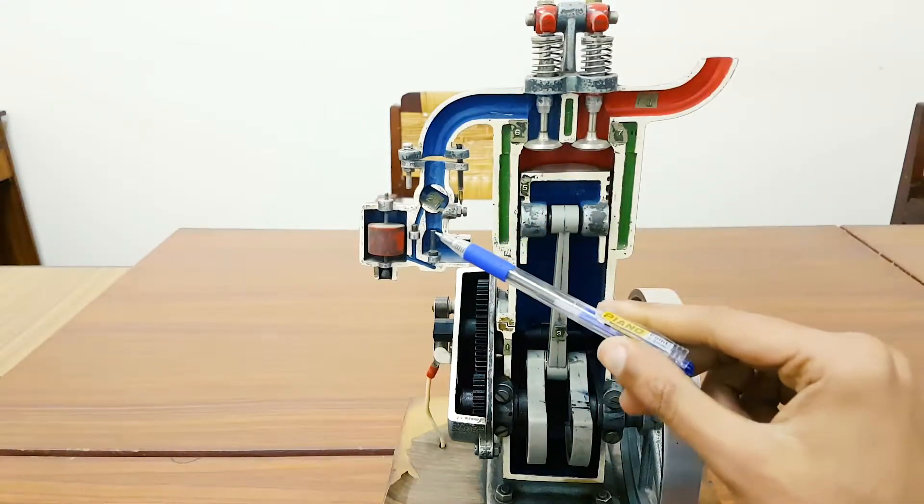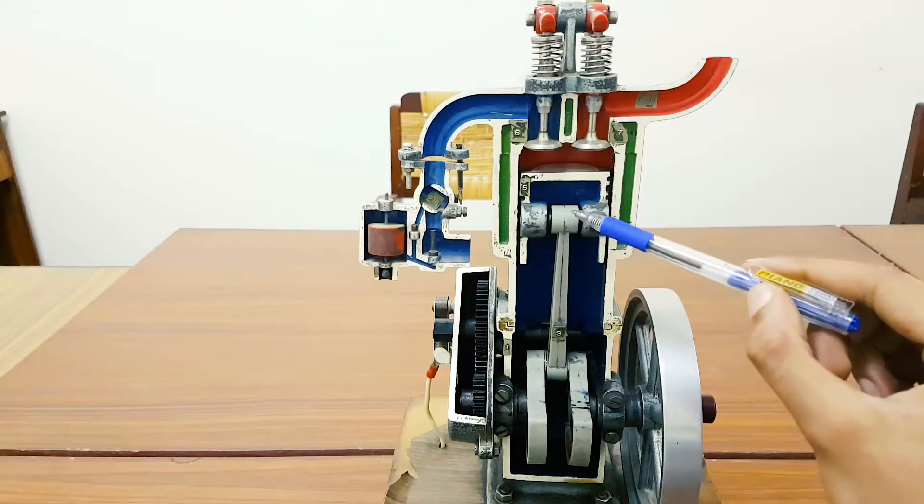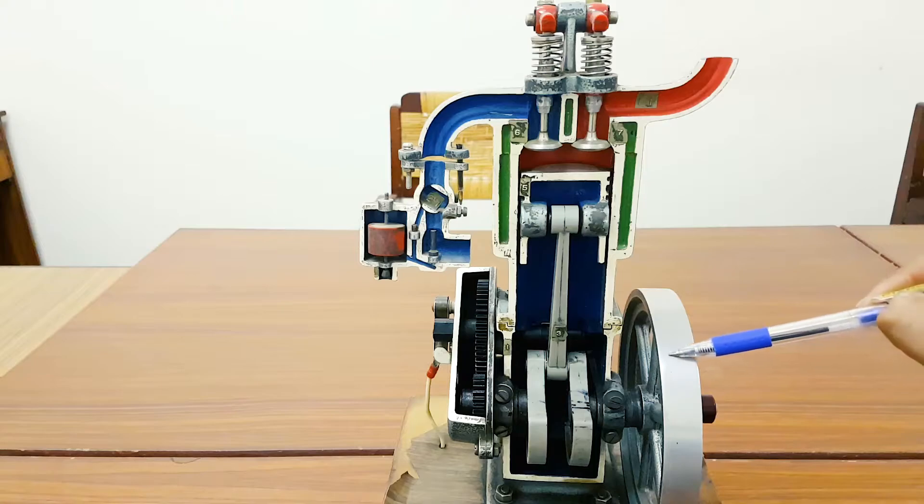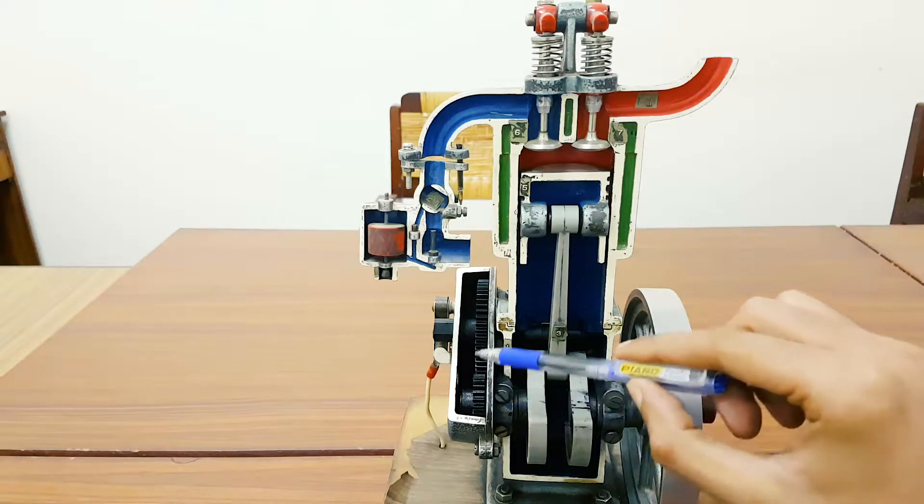Carburetor, this is your piston, the connecting rod, crankshaft, flywheel again, and these are the gears from crankshaft to camshaft.